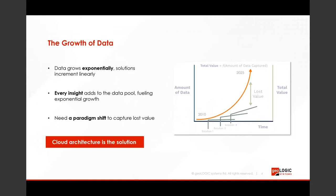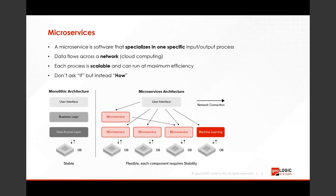One of the reasons that platforms like this are important is because they solve the problem of exponential growth in data. Traditional solutions grow linearly, but data has been growing exponentially, especially with the new insights that can quickly be created with cloud computing. We need cloud architecture to capture all of this data and extract its information. Cloud architecture can be summed up as a microservices architecture — different components all connected using a network, as opposed to a monolithic architecture where all components interact in one system. In a microservices architecture, every component is scalable, and we ask how instead of if a service can accomplish a certain task.